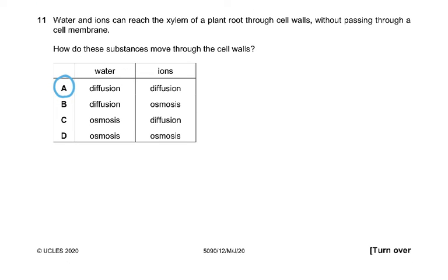Question 11: Water and ions can reach the xylem of a plant root through cell walls without passing through a cell membrane. How do these substances move through the cell wall? The cell wall is fully permeable, so it is not crossing any partially permeable membrane. So the water and ions would all move in by diffusion. Water would be by diffusion because it's going through the cell wall. It isn't passing any cell membrane. The ions would also be moving in by diffusion because they're only passing through the cell wall.